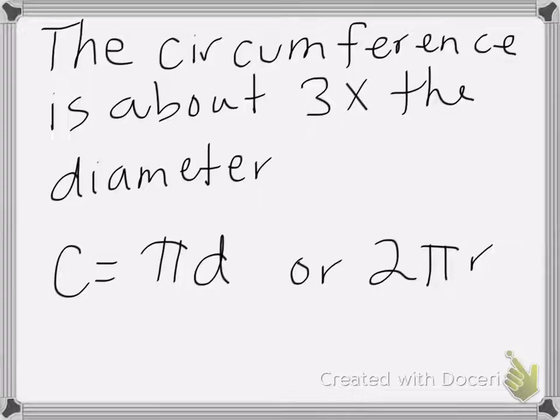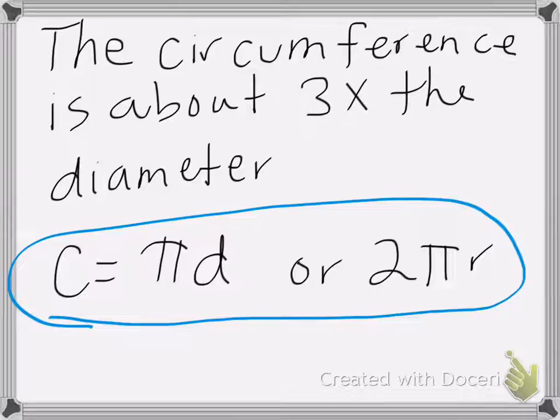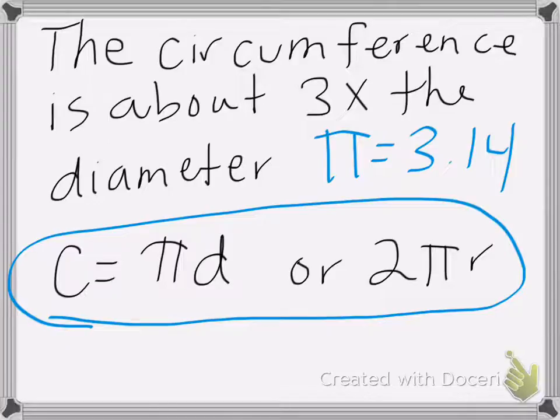So our formula is circumference equals pi times the diameter, and remember pi is equal to 3.14. As you can see, it's really close to 3.